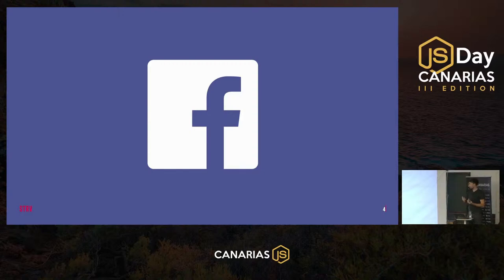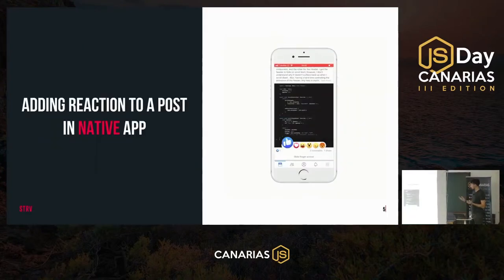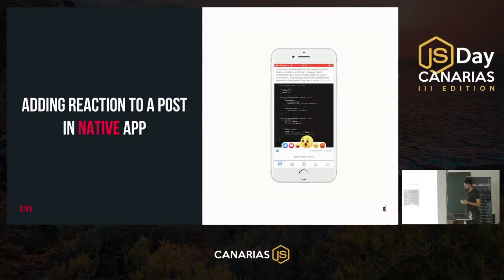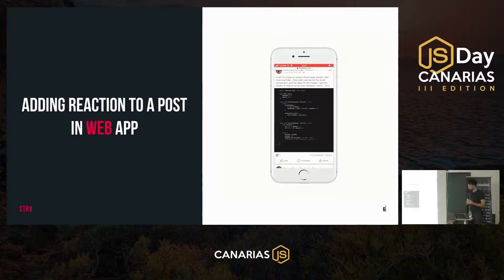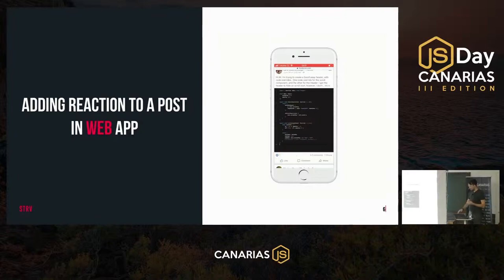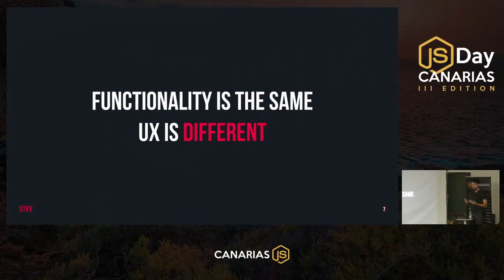To see why that might be, I want to show one simple interaction: adding a reaction to a Facebook post. In the native app, we get a nice toolbar that pops from the bottom, all the emojis are animated and alive, we get a nice bubble animation when we hover over them. On the web, it works kind of the same but it's a little laggy — it lacks those nice finishing touches of the native app.